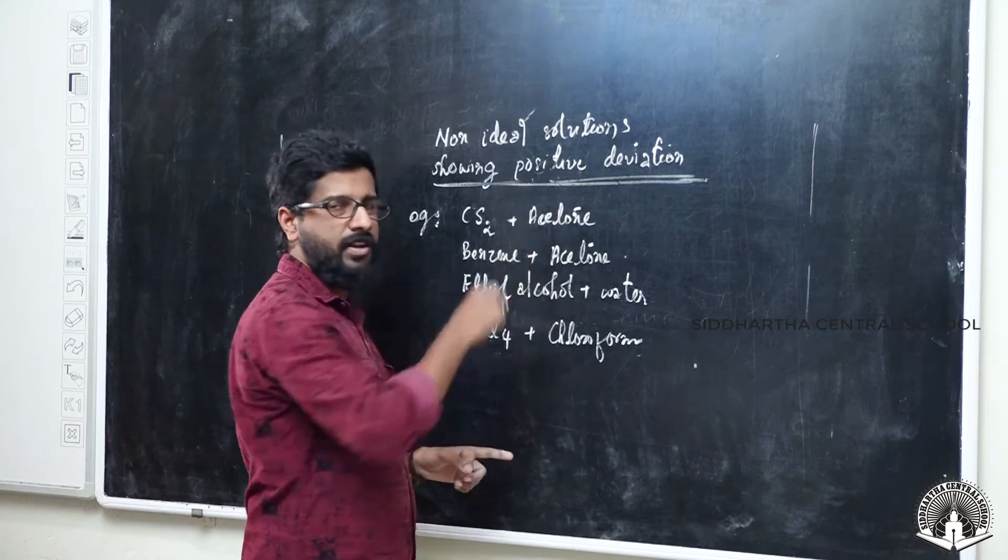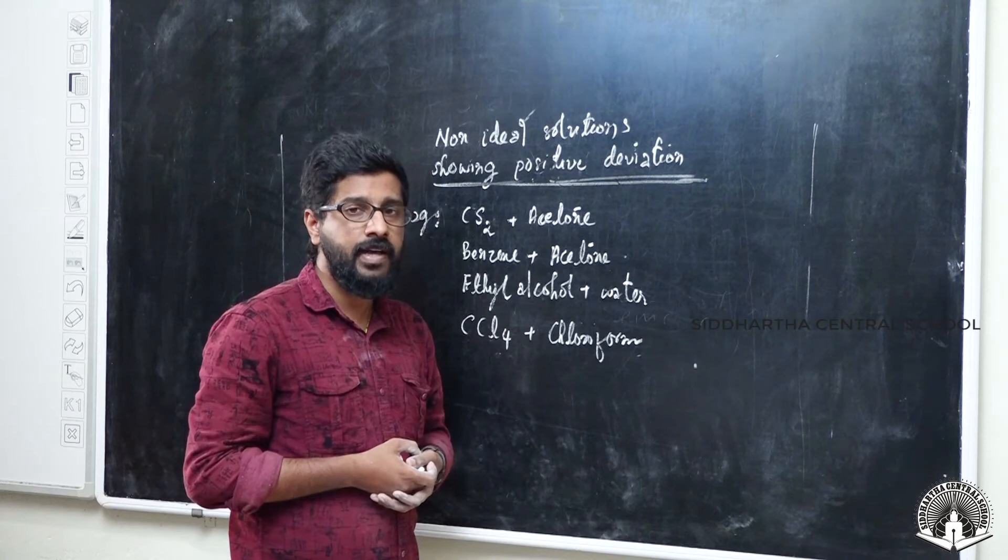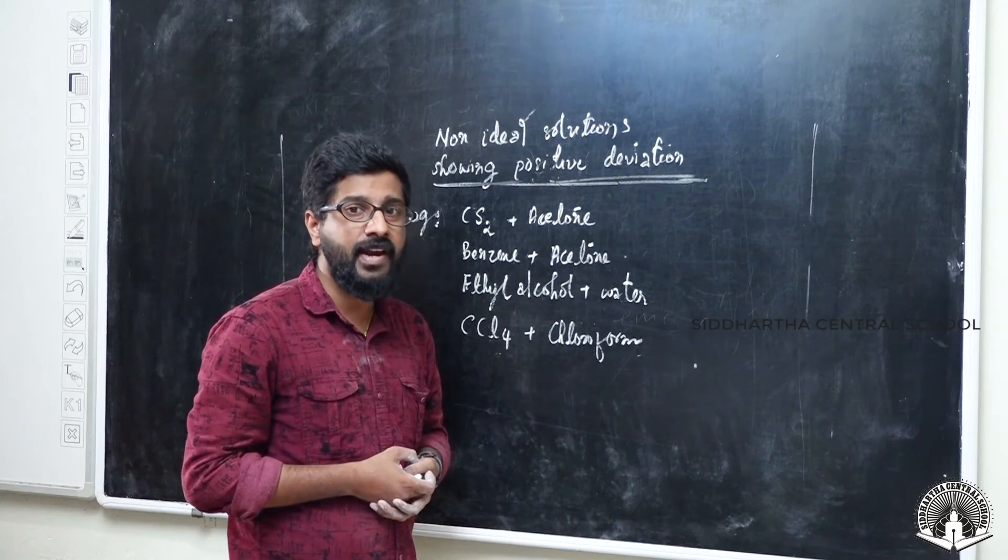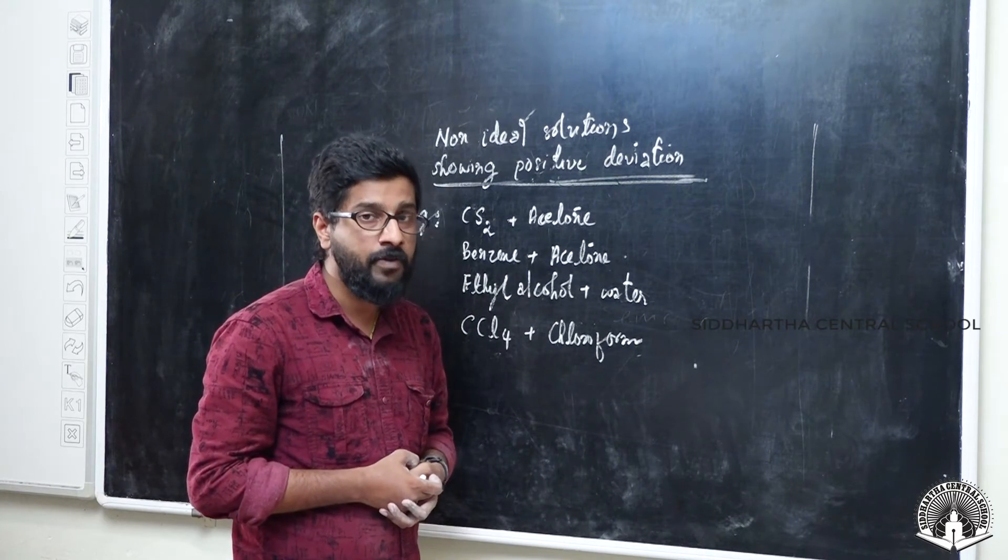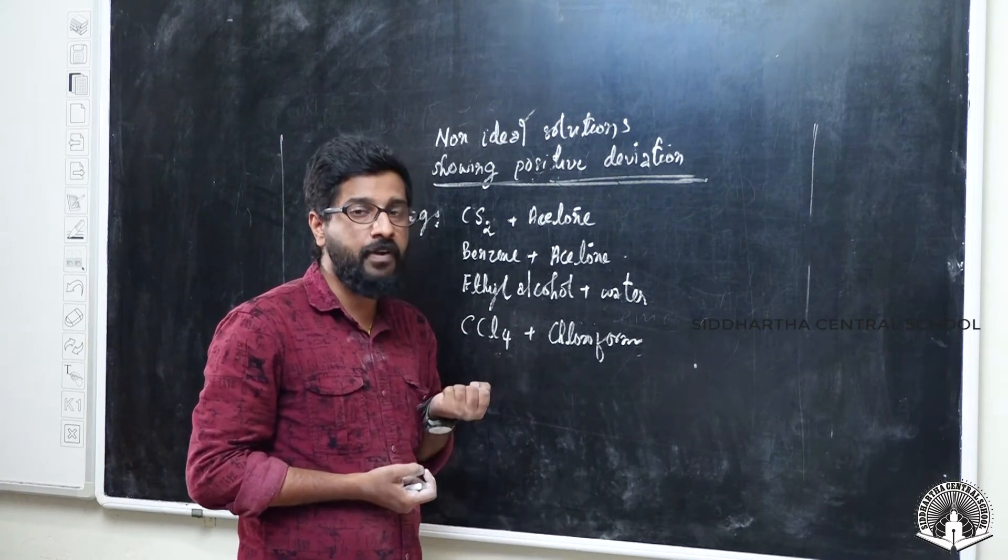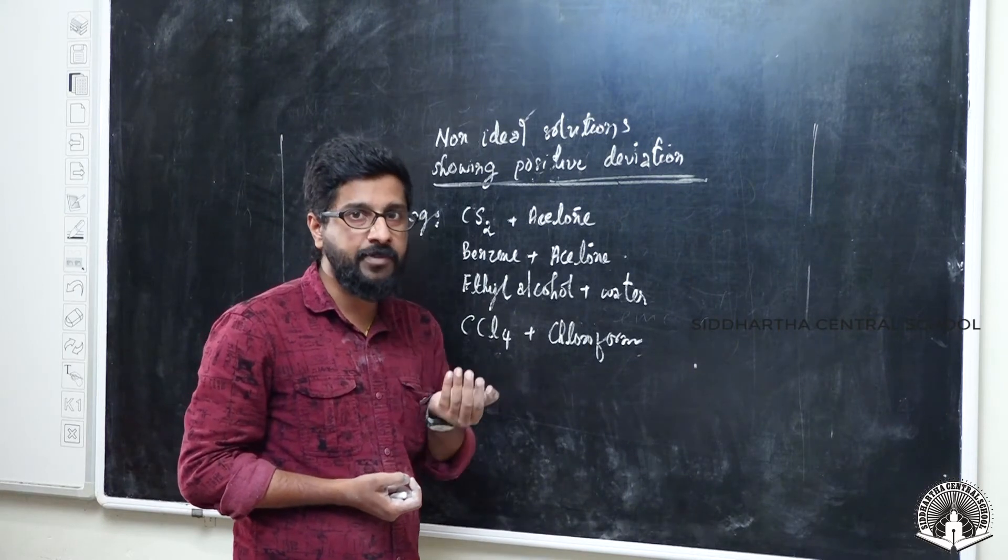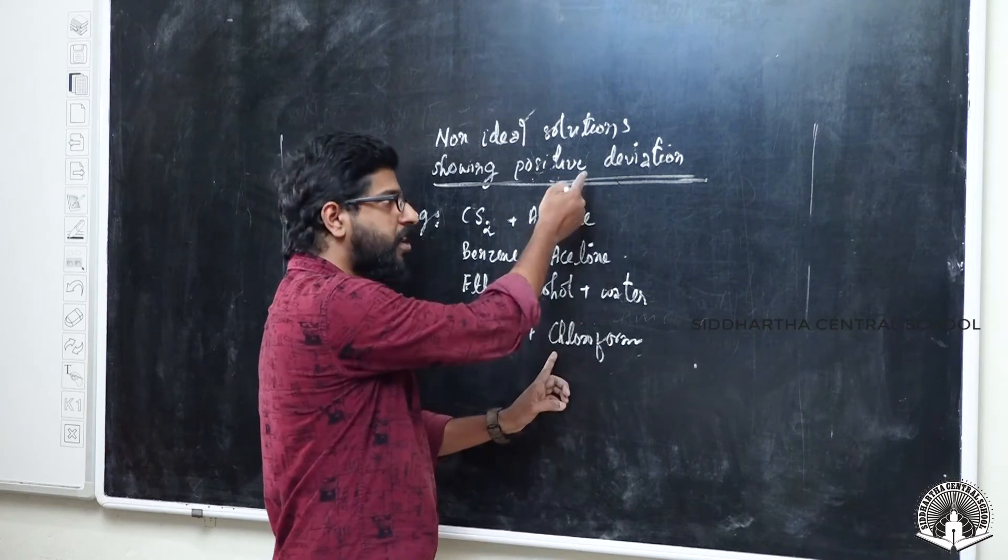In positive deviation, delta H-mix is greater than zero. That means delta H-mix is a positive value - it is an endothermic reaction. For endothermic reactions, heat is absorbed from surroundings. When surrounding heat is absorbed, we have a cooling sensation. CCL4 and chloroform show positive deviation.